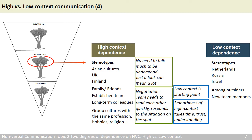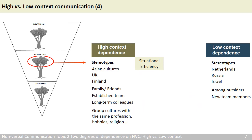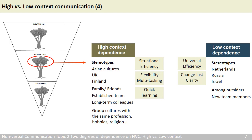Each style has a lot of advantages. Because people of high-context know each other well and can read nonverbal cues easily, they are effective, flexible, and can multitask if needed. They also learn quickly, thanks to a broad span of attention. For low-context, logic and rules can make it effective for outsiders to work effectively with insiders. When change is needed, a clear common rule for all makes change happen fast. Learning that follows rules and procedures does not happen fast, but in a steady way.